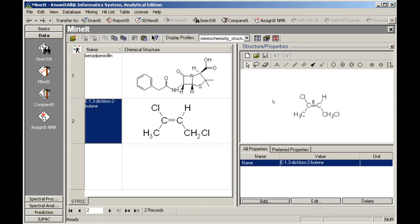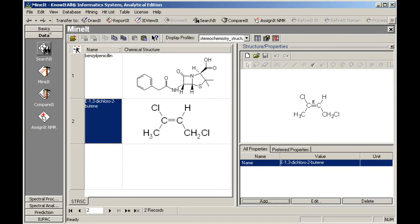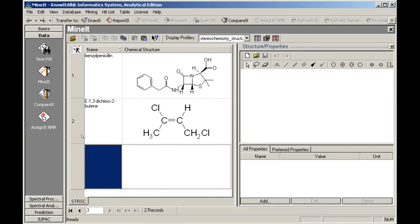For the next database record, we will copy and paste the structure in the second record, then modify it using the drawing tools available in the Structure Properties pane. Choose Edit Copy Structure. Click in the next available row in the database pane. Then choose Edit Paste Structure.